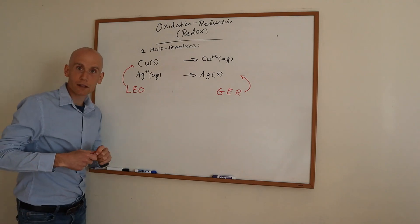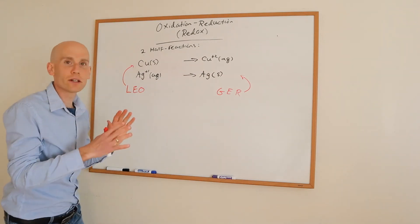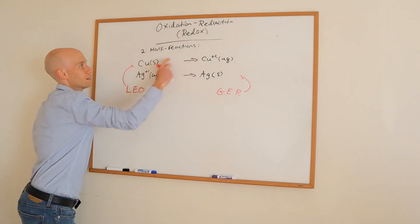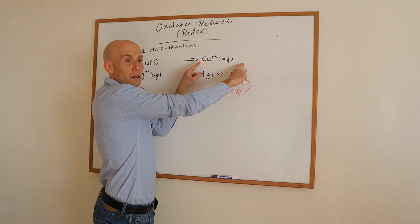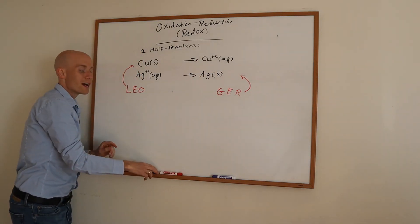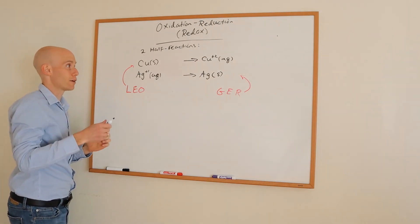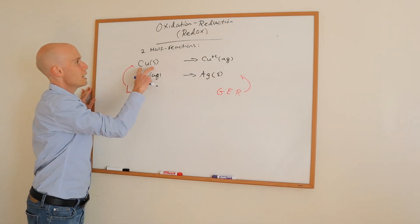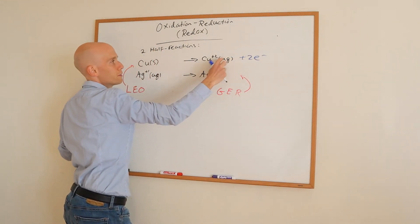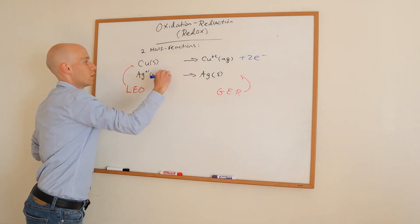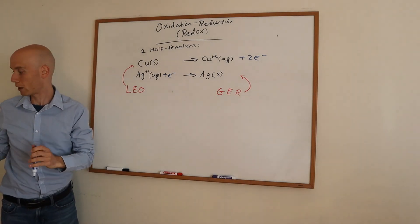One more thing: assign electrons to each half reaction to balance the charges. It's important to balance not just masses but also charges. For copper: the reactant side has charge zero, the product side has charge positive two, so I need to add two electrons to the product side. For silver: positive one on the reactant side and zero on the product side, so I need one electron on the reactant side. These are now my two half reactions with electrons ascribed.